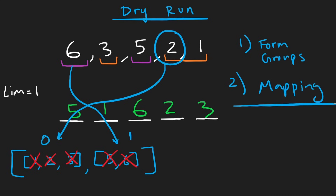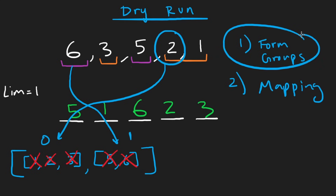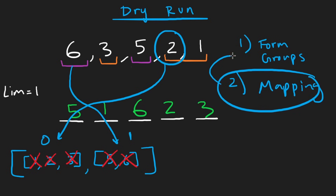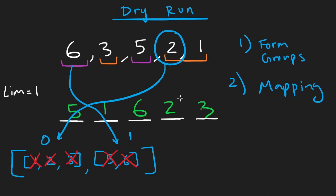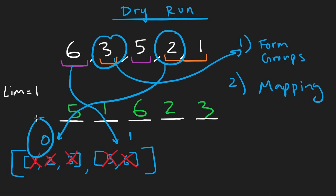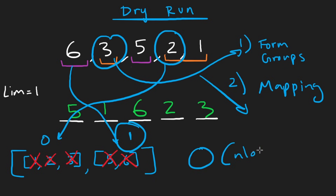How do we map each number to its group? As we add each number to a group during the sorting step, we simultaneously record a mapping from that number to the group's index. So when we traverse the original array, we look up which group index each number maps to, then pop from that group. Knowing all this, the overall time complexity is O(n log n) due to sorting, and O(n) space for the groups.